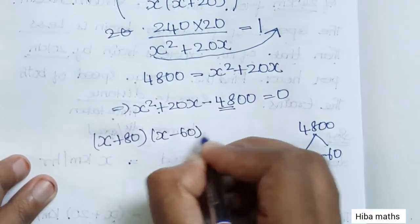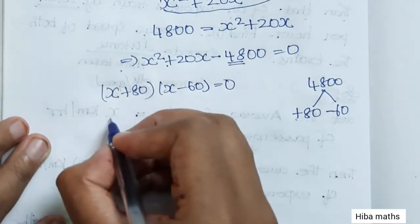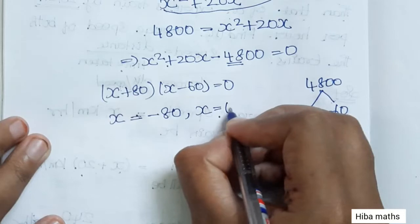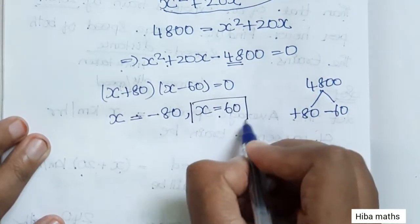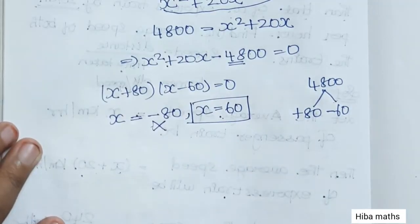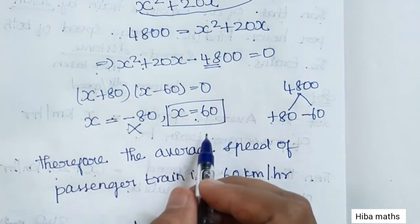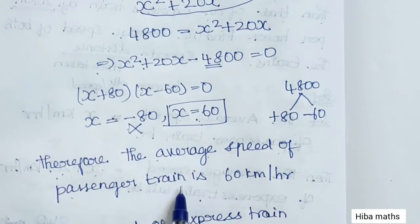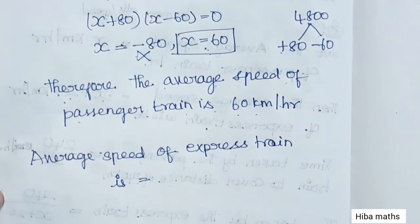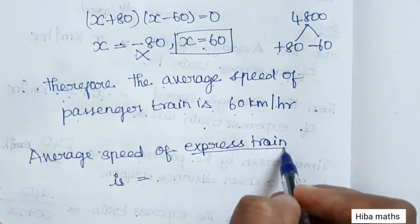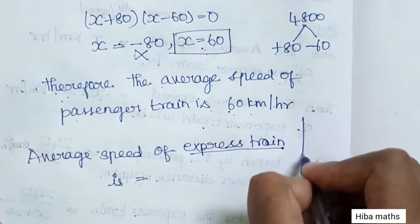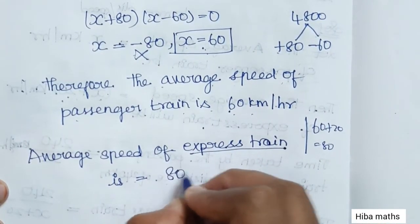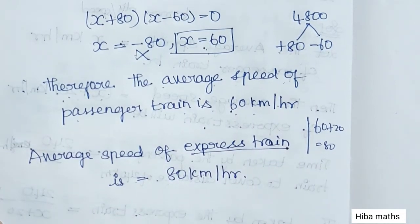Factoring gives us x plus 80 times x minus 60 equals 0. So x equals minus 80 or x equals 60. We take the positive value, so x equals 60. Therefore, the average speed of the passenger train is 60 km per hour, and the average speed of the express train is 60 plus 20, which is 80 km per hour. Thank you so much for watching.